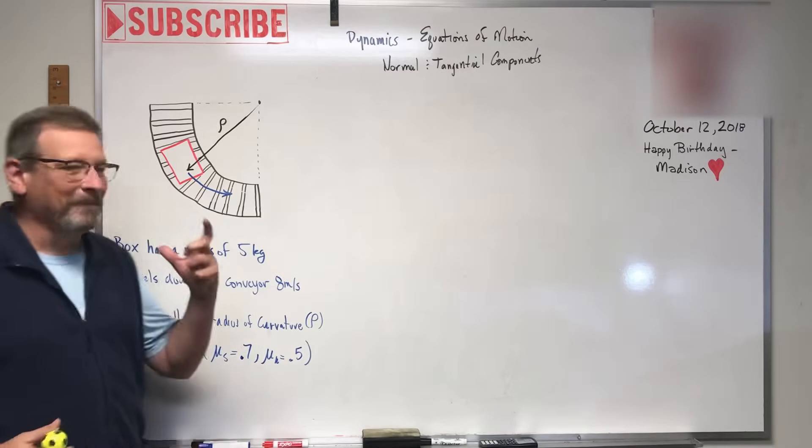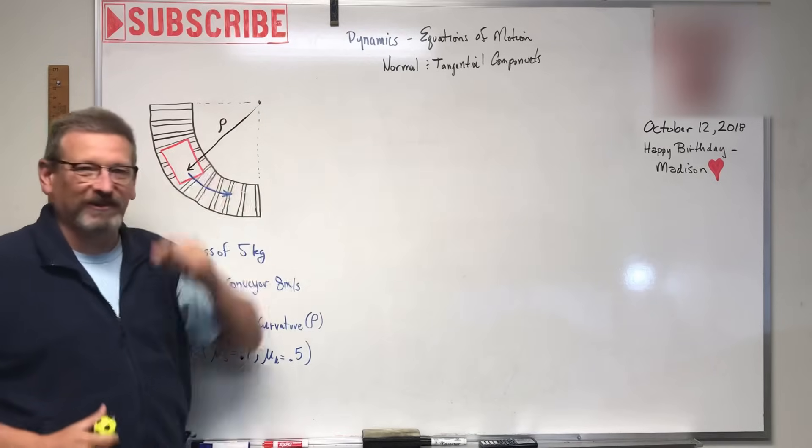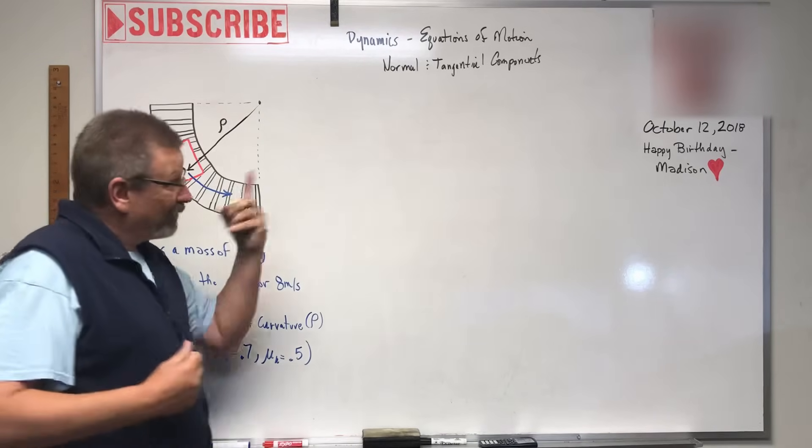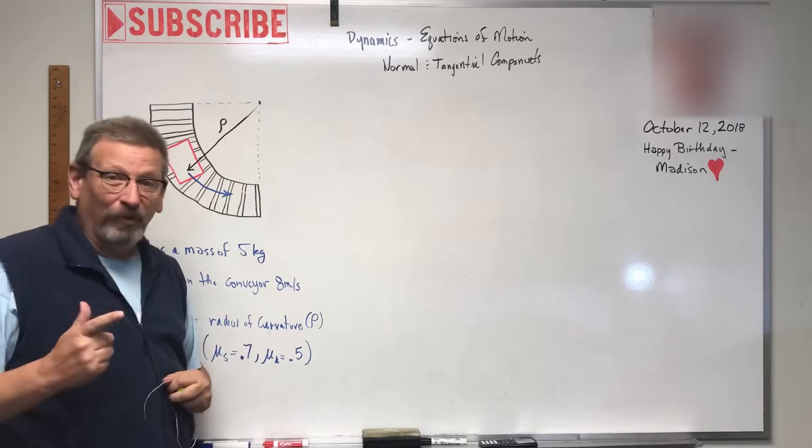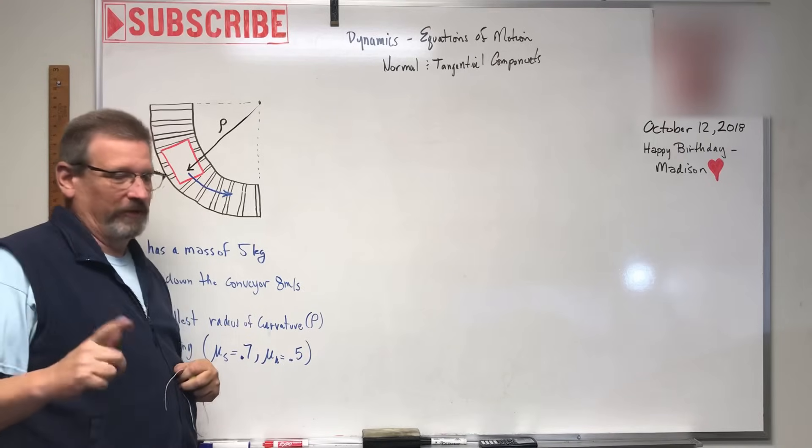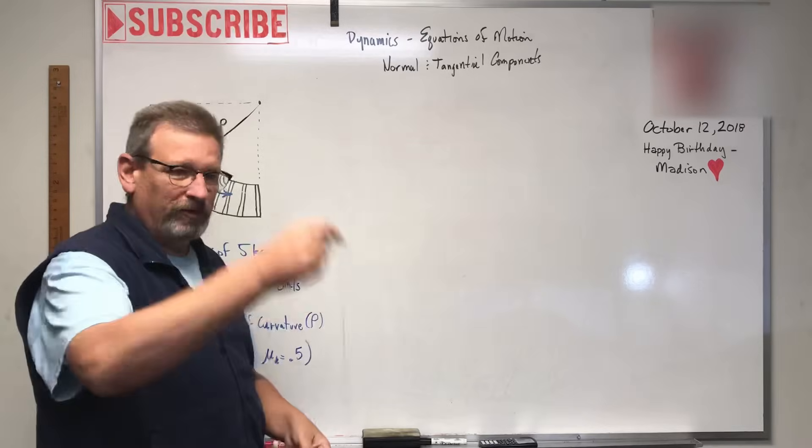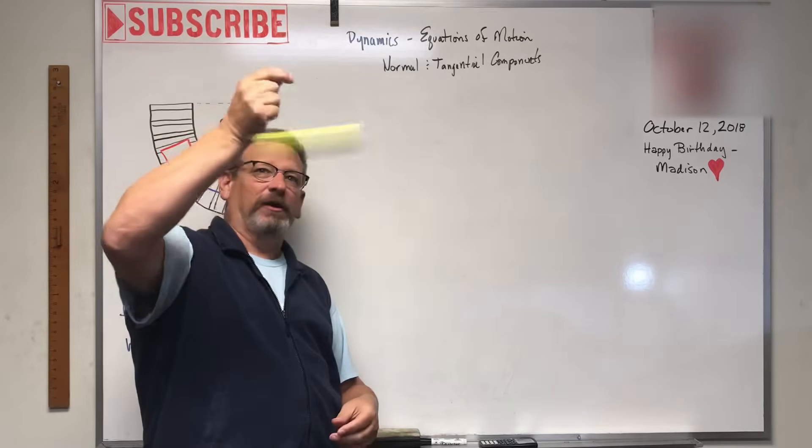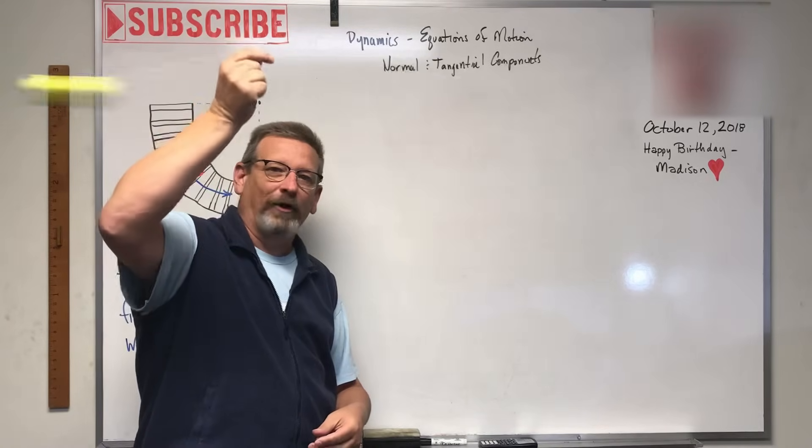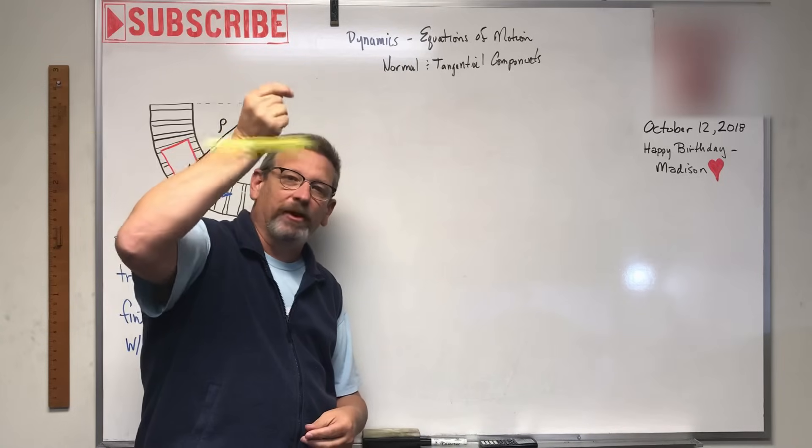Hello my friends, welcome back. We're going to talk about dynamics today, particularly equations of motion with normal and tangential components. If I have a weight going around a circle or around a corner with constant curvature, what is the acceleration on the ball?